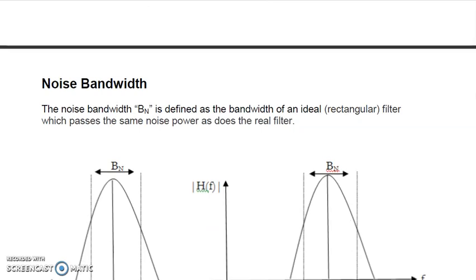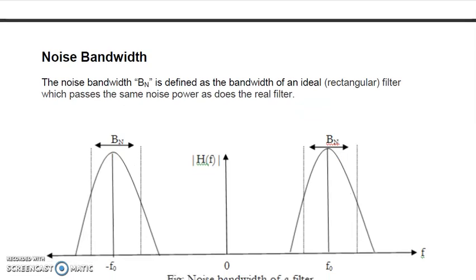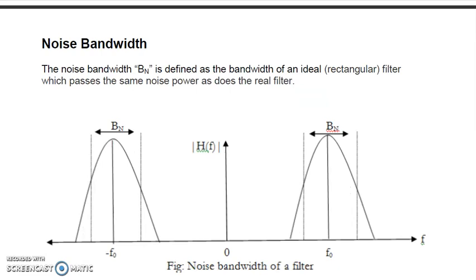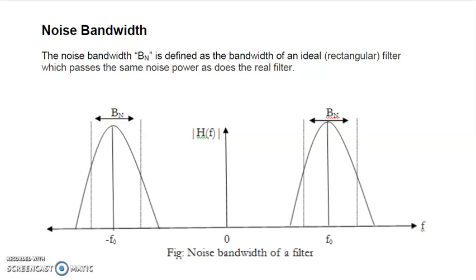Now, what is the concept of noise bandwidth? It involves the concept of a filter. As we know, when we study the block diagram of a receiver, at the first stage and at the last stage there are filters. Filters are electronic circuitry which pass a certain bandwidth of signal — certain frequencies are passed and others are rejected.